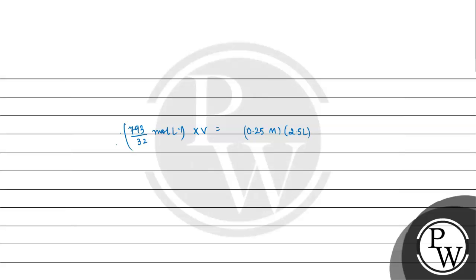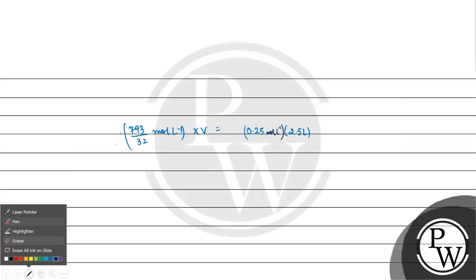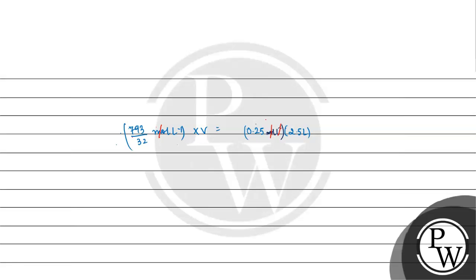Molar can be written as mole per liter, so the units are clear. Now mole cancels with mole, and per liter cancels with per liter.